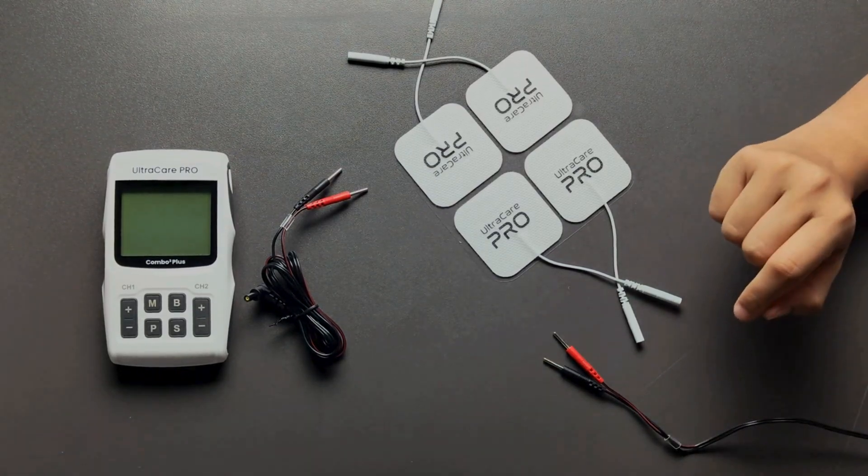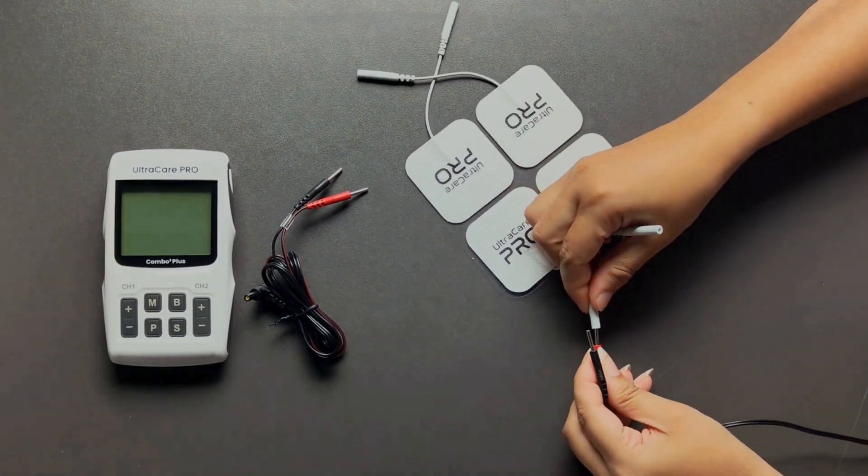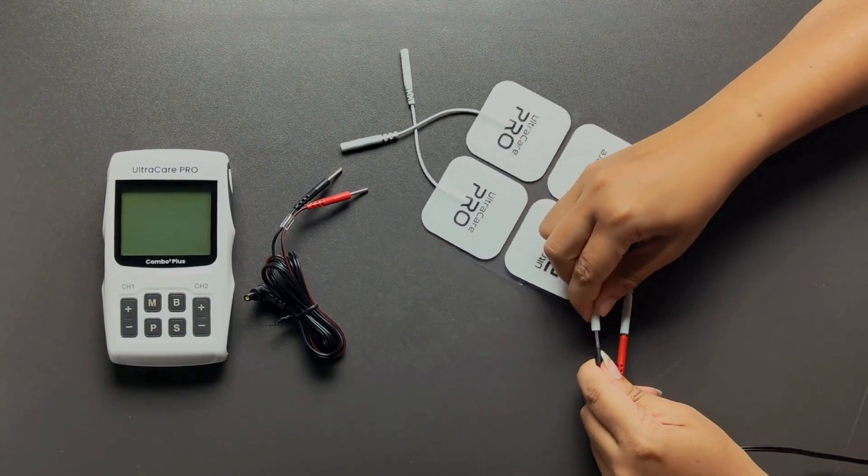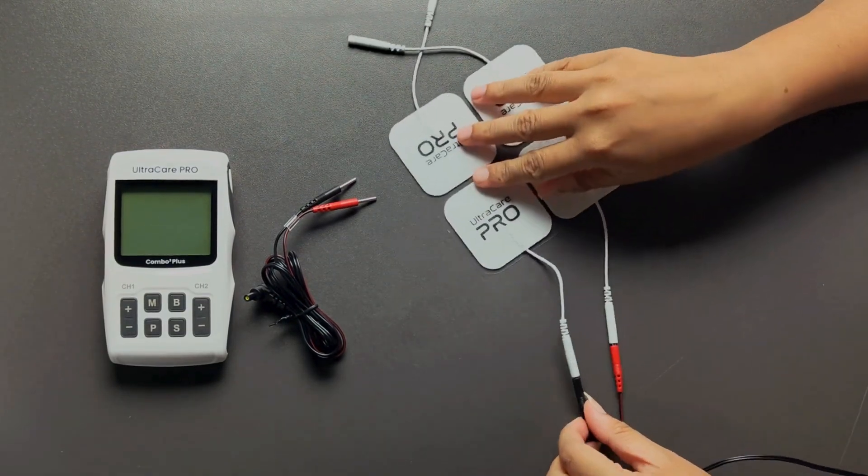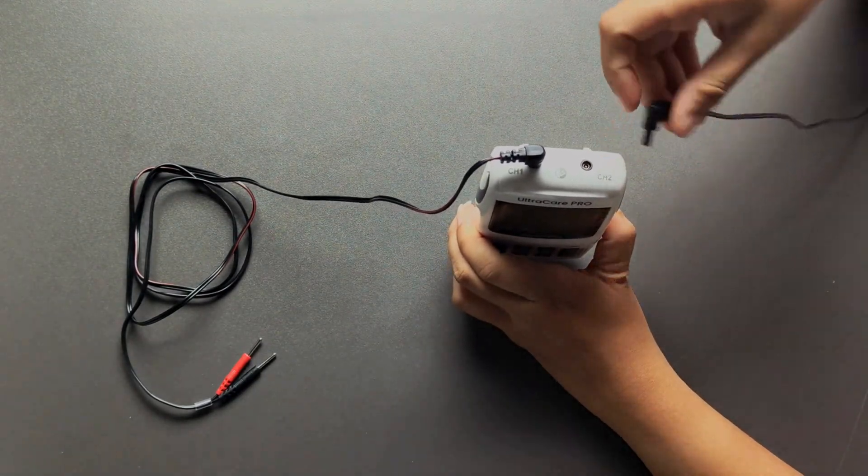First, connect the pads and lead wires. Insert the lead wires into the electrodes. Now plug the lead wires into the combo unit.